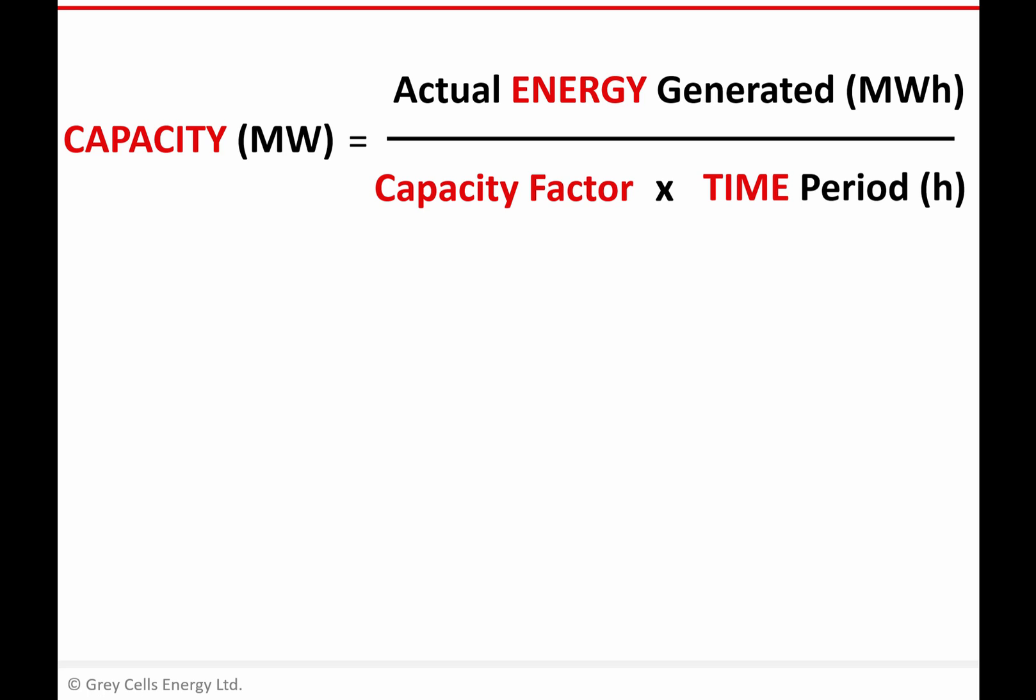Another common calculation which might use this arrangement is to say, okay, we want to replace 10% of the energy generated with coal power generation with solar power generation because we want to reduce carbon emissions. Again, you could take the energy that you want to replace, you could have some assumption on capacity factor of the solar farms you're going to build, and again, that would tell you how much capacity of solar you would need to build to replace the equivalent capacity of coal power generation.